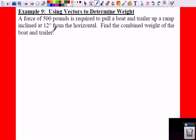Alright, so what we're going to have is we have to figure... We have a force of 500 pounds is required to pull a boat and a trailer up a ramp inclined at 12 degrees from the horizontal. So what you're going to have is a ramp going up at 12 degrees, right here. And we need to find the combined weight of the boat and the trailer.